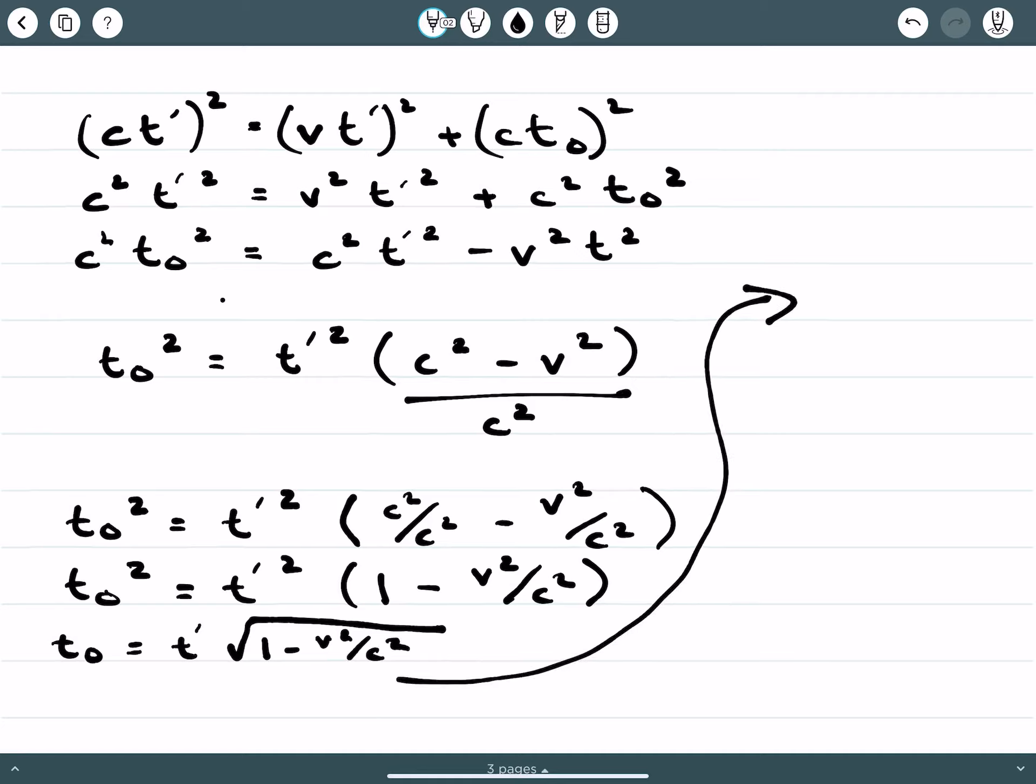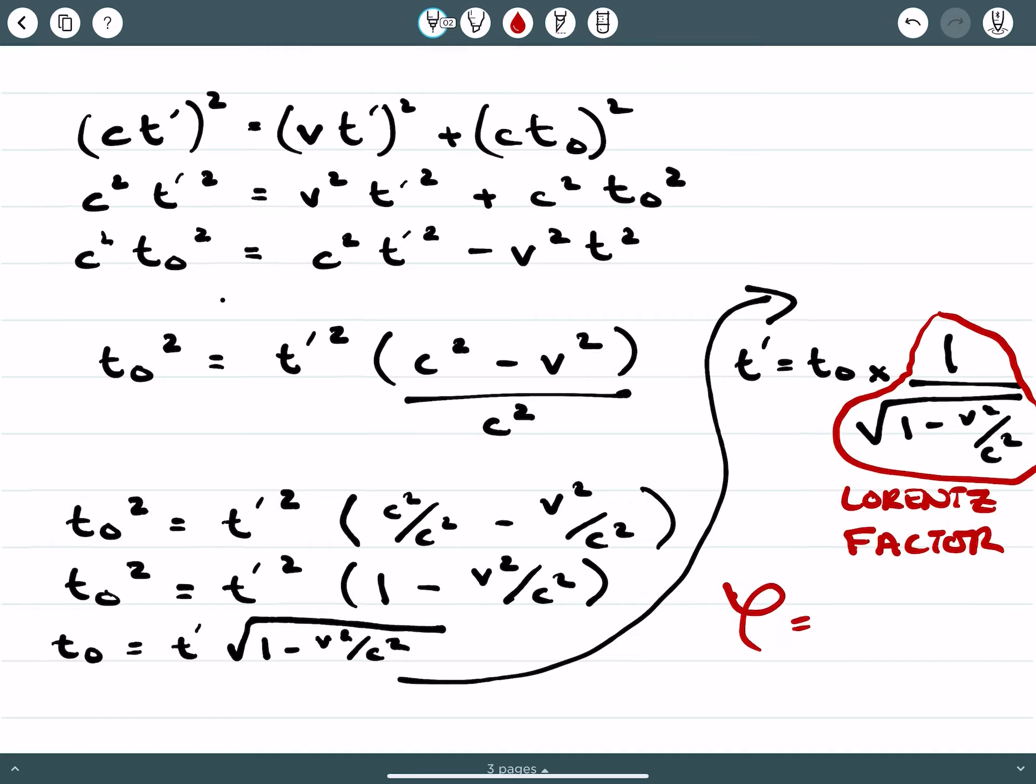And then what we are after to do here is to put it in terms of dilated time, and that would be proper time multiplied by 1 on the square root of 1 minus v squared c squared. And obviously this component here is our Lorentz factor, and we say that our Lorentz factor is given by 1 over the square root of 1 minus v squared on c squared.